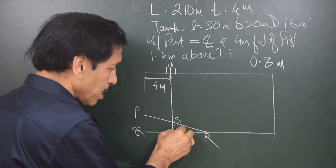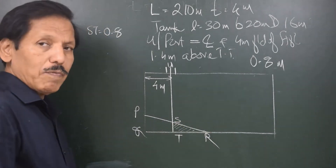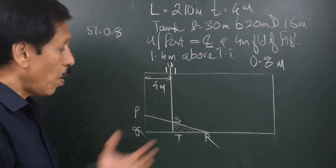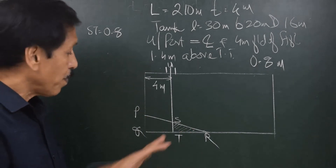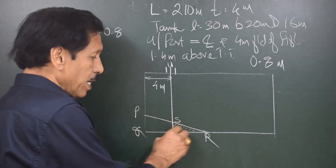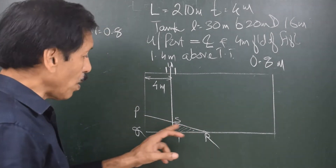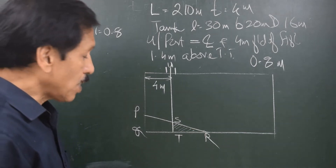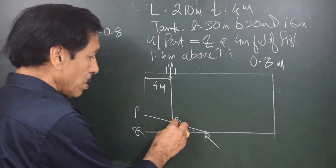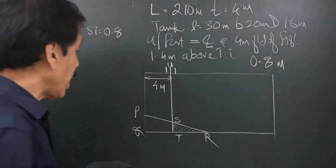Instead of remembering the formulae, we should work with the drawing and derive the results from it. Look at this right angle triangle. Whenever the vessel is trimmed and you are looking at a tank or liquid from the side, a right angle triangle is likely to form with a small side and a long side. The relationship between these two perpendicular sides — the smaller side and longer side — is the same relationship as trim and LBP.